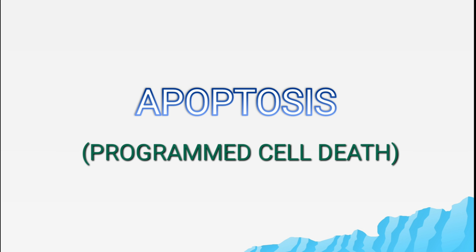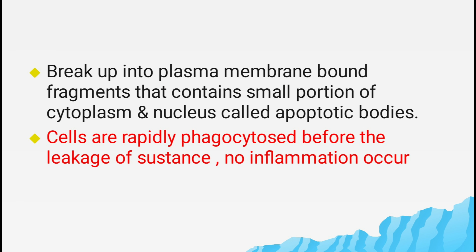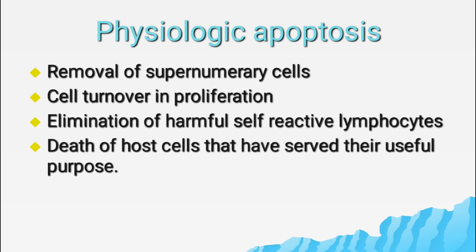Apoptosis is also known as programmed cell death. The apoptotic cell breaks up into plasma membrane-bound fragments containing small portions of cytoplasm and nucleus — these are called apoptotic bodies. The plasma membrane of the apoptotic bodies is altered to produce 'find me' signals for phagocytosis. The dead cell is rapidly phagocytosed before leakage of contents, so inflammatory reaction does not occur.